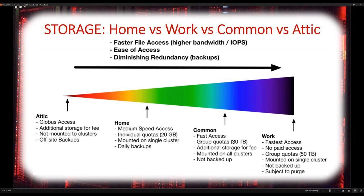We have a lot of storage available, and each of our four file systems serves a different purpose. On the left side of our scale is our slowest file access but most redundant and backed up systems. As we go from left to right, the speed of the file systems goes up greatly and is much easier to access for your workflows. However, the redundancy of the file system goes down in favor of performance.